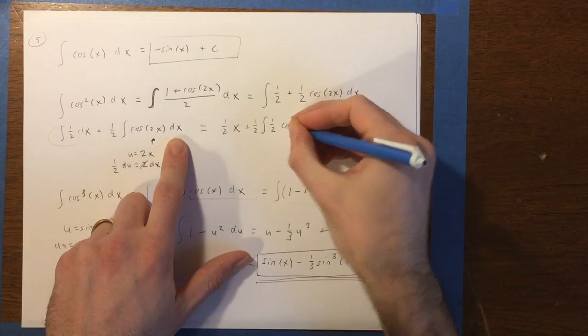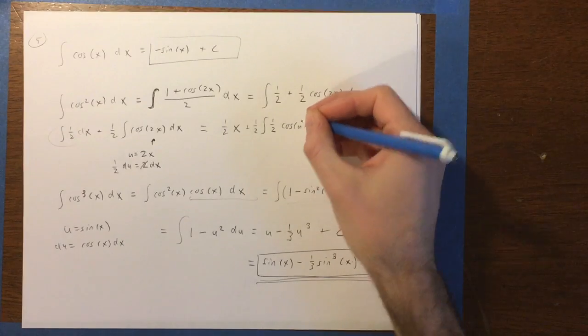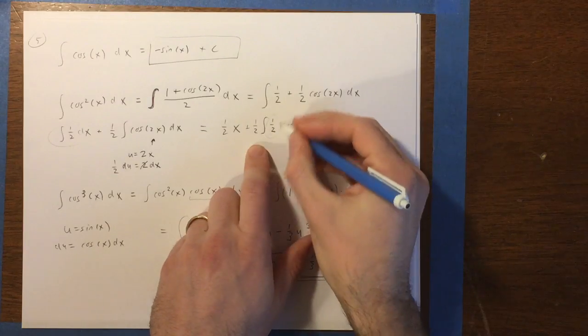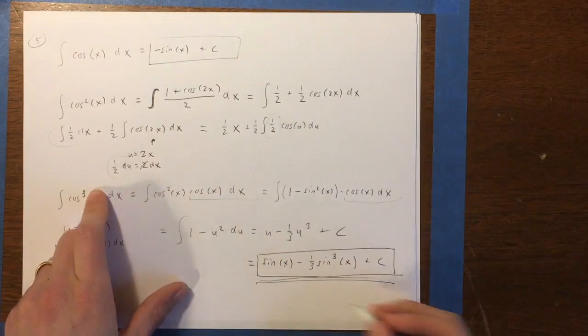So then we're going to have cosine of u times du. Okay, the dx got replaced by 1 half and du. So this came from this, all right?